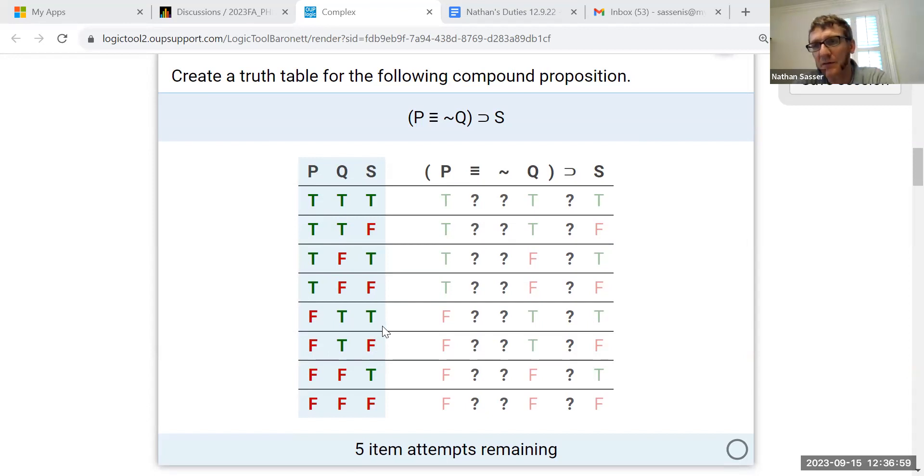I want to go as far inside the parentheses as I can, which leaves me with either the biconditional or the negation sign. But I need to figure out the negation sign first before I can determine the truth value of the biconditional, because this not Q is one of the items that determines the truth value of the biconditional. So let's start with the negation sign.